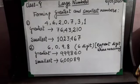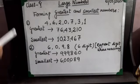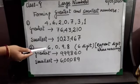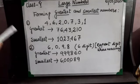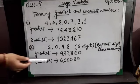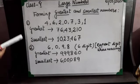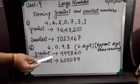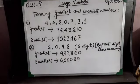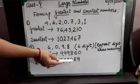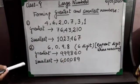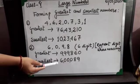While making the smallest number, we follow the same rule — we will not start the number with 0. We take the next smallest digit after 0, which here is 6. So we start with 6, repeat 0, then put the remaining digits in ascending order: 8 and 9. So my smallest number is 6,00,089.